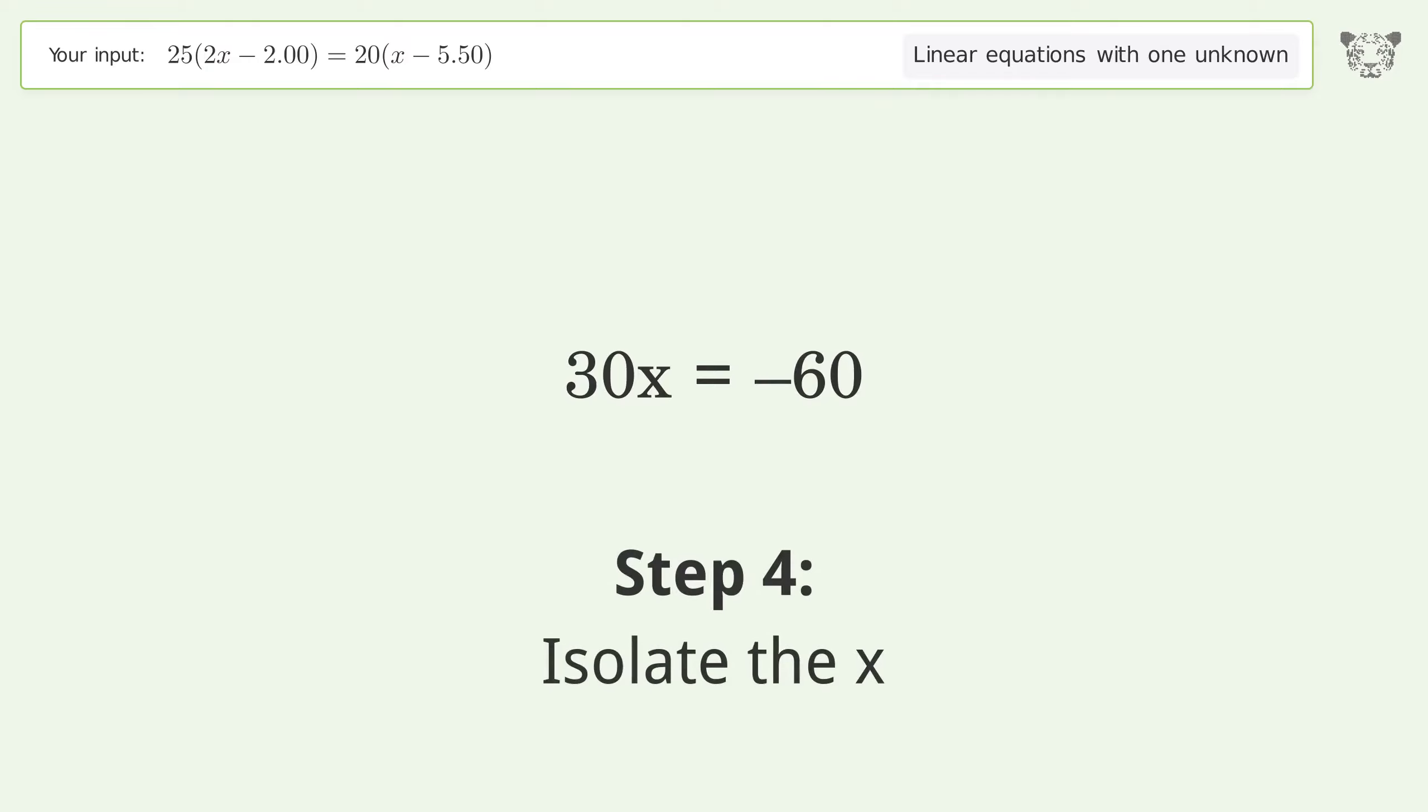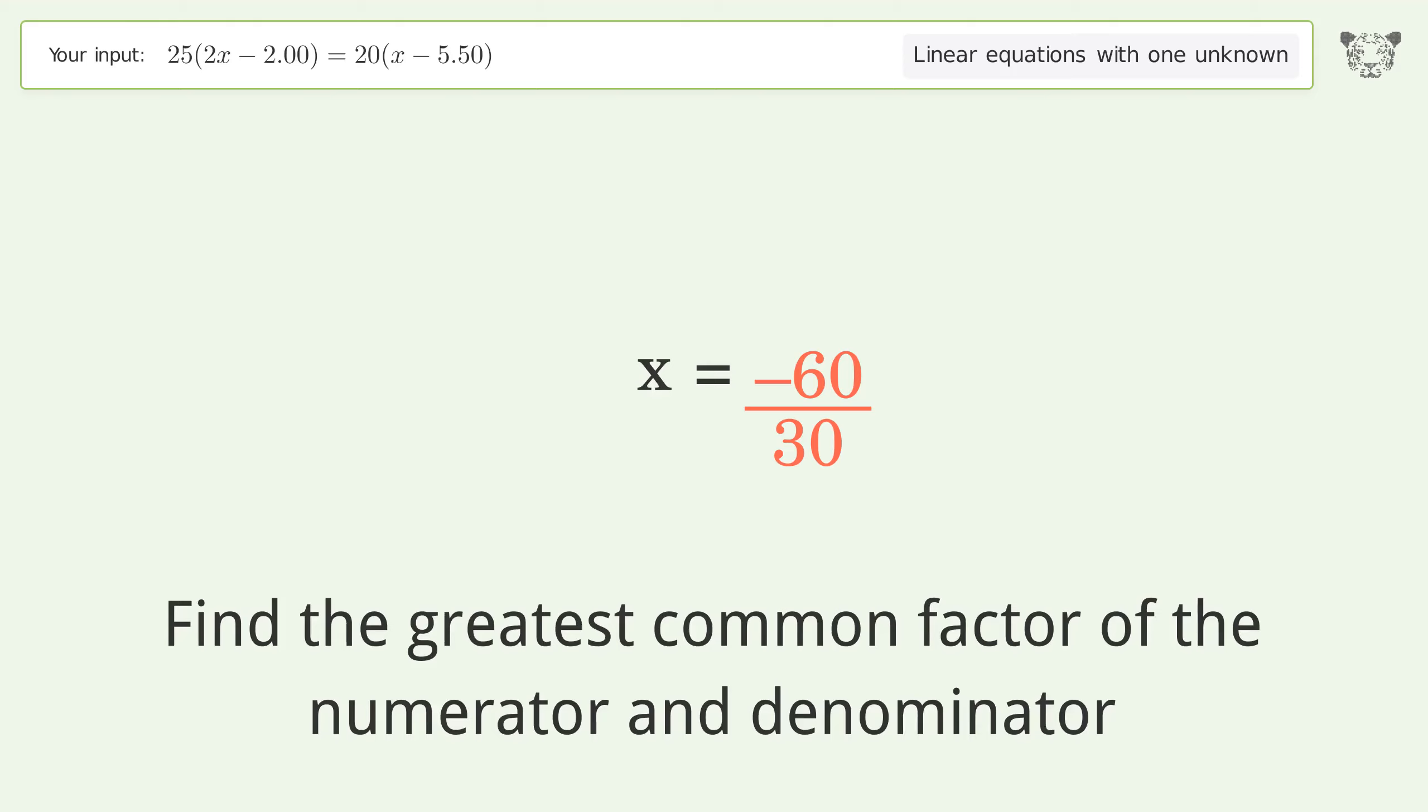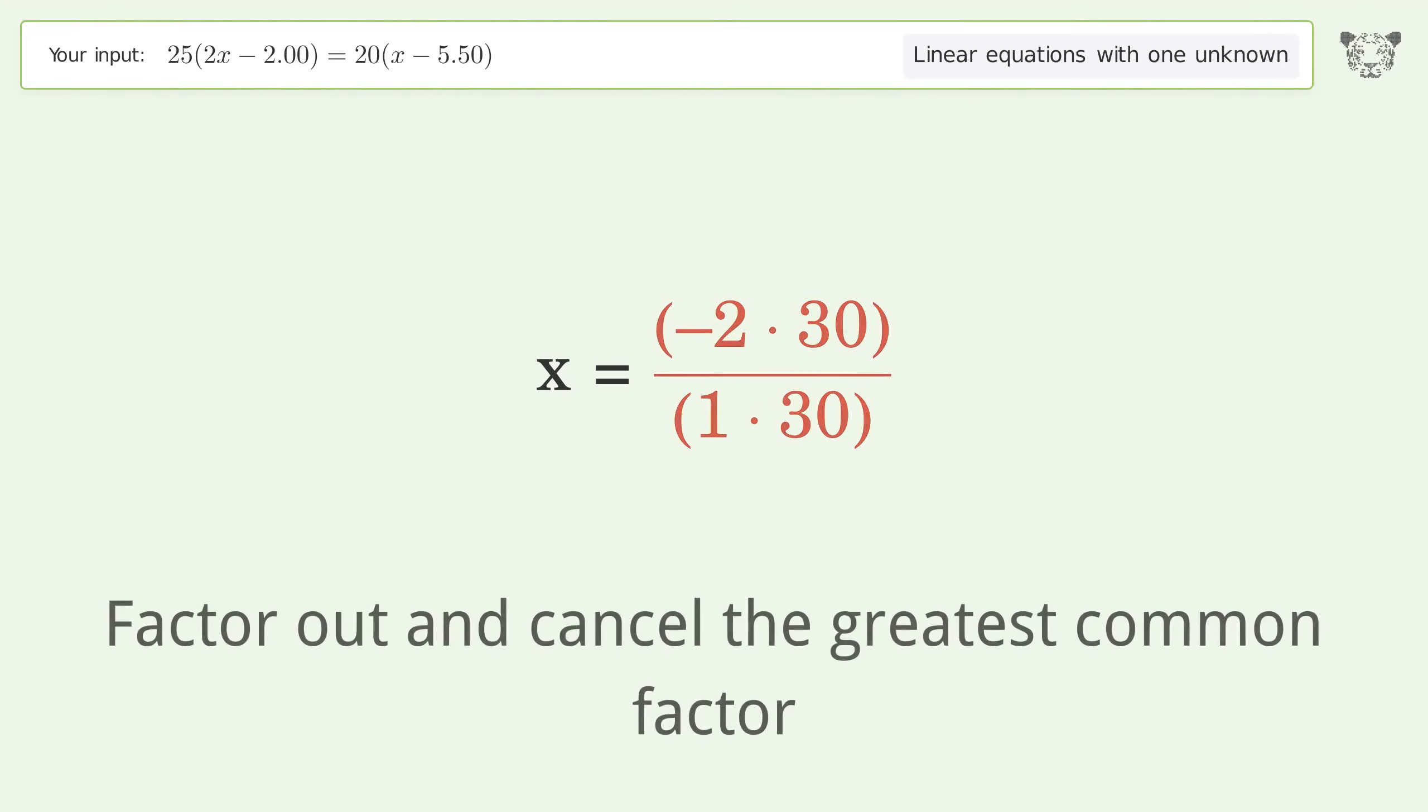Isolate the x by dividing both sides by 30. Simplify the fraction by finding the greatest common factor of the numerator and denominator, then factor out and cancel the greatest common factor.